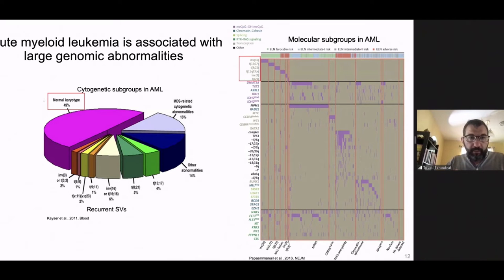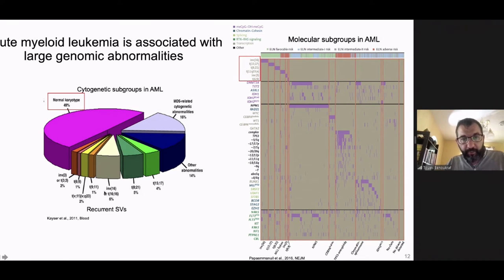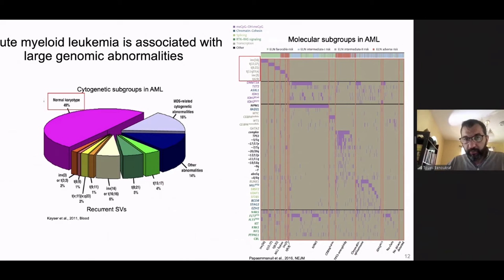We took acute myeloid leukemia as an example, mainly because in Singapore it affects many patients. About half of patients are diagnosed with a normal karyotype — meaning when we perform sequencing we cannot see any genomic abnormality. The other half have visible inversions, translocations, and so forth. We took that ~50% normal-karyotype portion and re-sequenced them to see if we could find structural variants using third generation sequencing — to determine whether the absence of findings was due to technology limitations rather than the genome truly being normal.